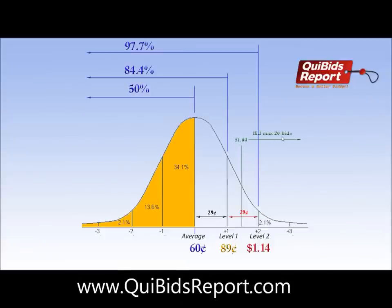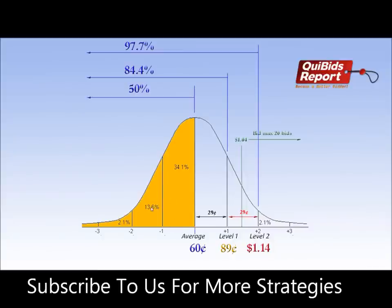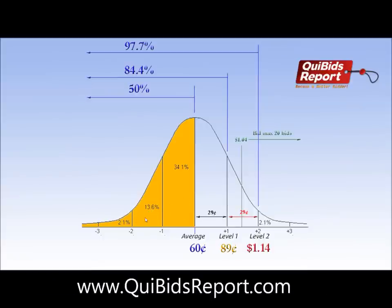So again, the entry point is $1.04. You want to bid no more than 20 bids and you want to bid late. You can also use the straddle method to straddle any of the other areas on the chart — each section between these lines represents $0.29, and you can straddle any one of these areas. If you use the straddle method on earlier auctions, you might want to be more aggressive in your bidding; if you apply it towards the end of the auction, you want to bid late.